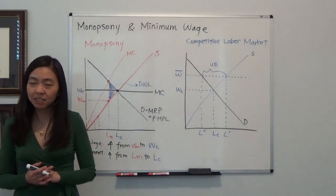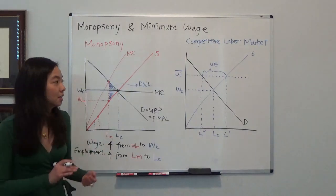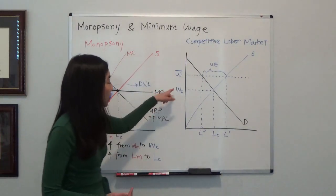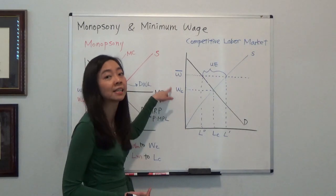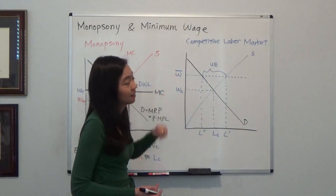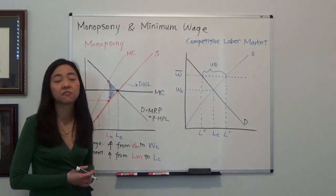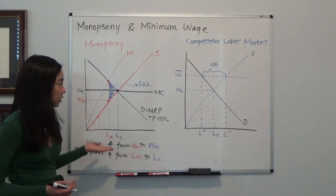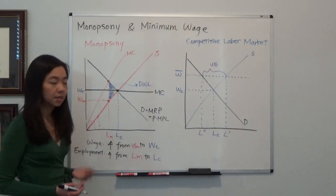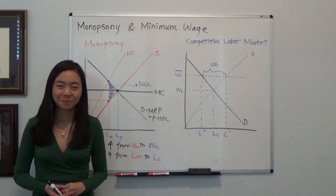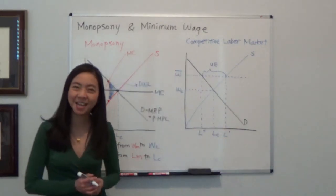And therefore, is minimum wage a bad thing? Well, it depends on the situation. If you have a perfectly competitive market and you set a minimum wage that is binding, meaning it's higher than the competitive wage, then yes, it's a bad thing. However, if you are in a market of monopsony, minimum wage law is actually a good thing. It helps the worker, it improves the employment, and it reduces the deadweight loss. So I hope this helps, and I'll see you next time.